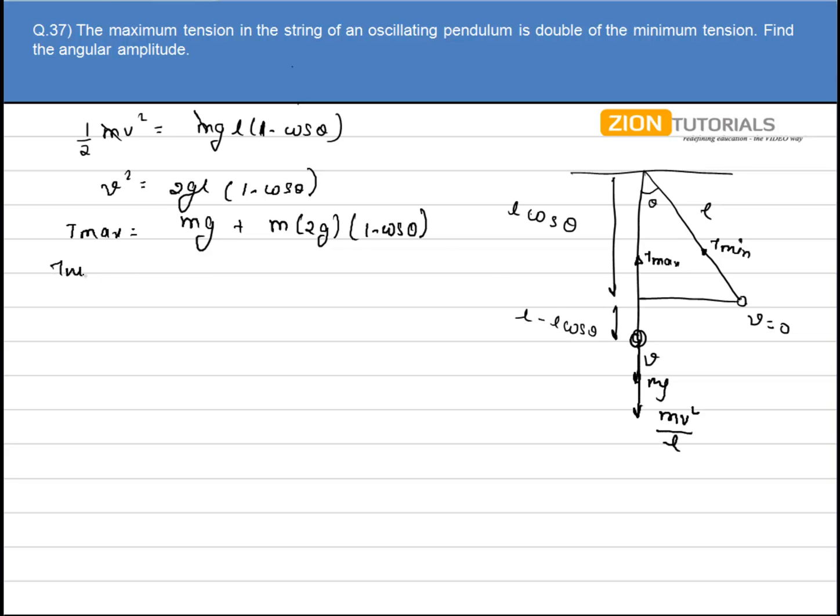And T minimum can be written as M G. This M G will be downward. Since the velocity is zero over there, it will be equal to M G cos theta.